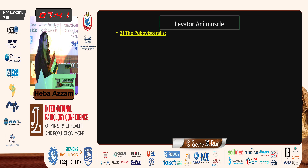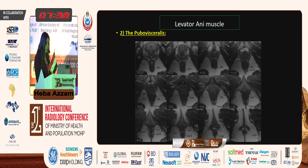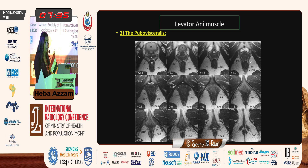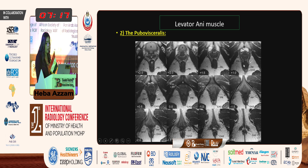The second part of the levator ani muscle is the pubovisceralis muscle, which also arises from the pubic bone. It is divided into partitions: the pubourethralis, pubovaginalis, puboanalis, and puboperinealis. We cannot differentiate these partitions at their site of origin — only by their insertion. The puboanalis is inserted into the intersphincteric space, the pubovaginalis into the vaginal wall, and the puboperinealis into the perineal body. On coronal images, we cannot differentiate the fibers of the pubovisceralis from the puborectalis.